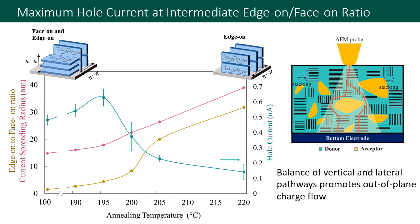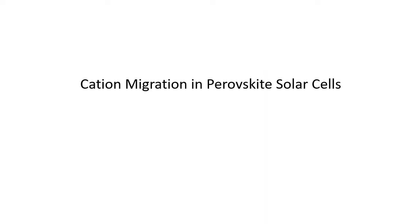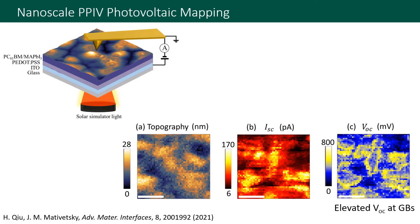I'll next briefly introduce some of our work on perovskite systems. Using the same point-by-point mapping approach outlined earlier, we measured local current-voltage characteristics in methylammonium lead iodide films under solar simulator light. We were then able to construct maps of the local photocurrent, open circuit voltage, and other photovoltaic parameters.